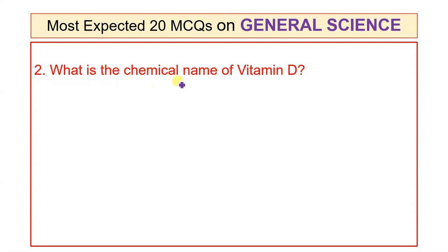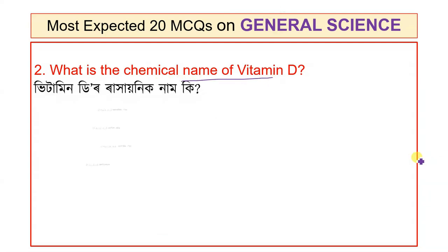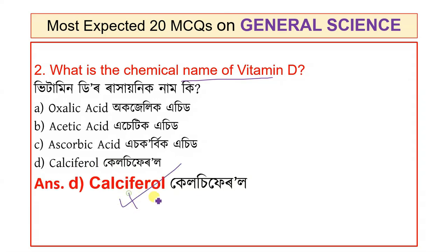Question 2: What is the chemical name of Vitamin D? Options include acetic acid, ascorbic acid, and calciferol. The answer is calciferol — option D. If Vitamin A is retinol, then Vitamin D is calciferol.